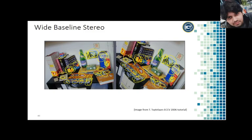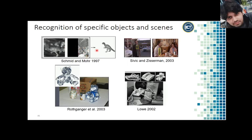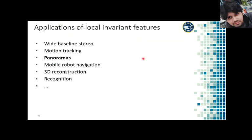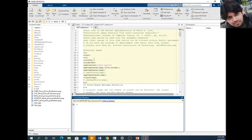SIFT has been used for recognition of specific objects and scenes. Key points have been used since the 1990s to detect and recognize objects like teddy bears and ties. Applications of local invariant features include wide baseline stereo, motion tracking, panoramic mosaicing, mobile robot navigation, 3D reconstruction, and recognition.